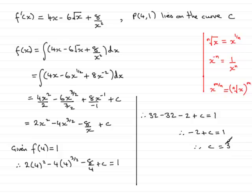All I need to do now is substitute c equals 3 back into this equation for f of x. So therefore f of x is going to equal 2x squared minus 4x to the power 3 over 2, minus 8 over x, plus the constant 3. And that brings us to the end now of this part of the question.